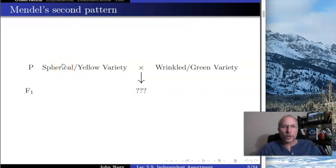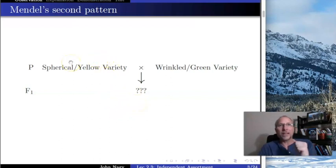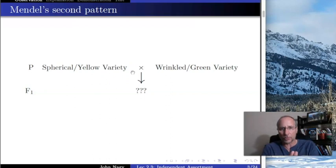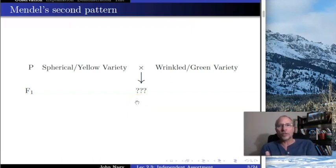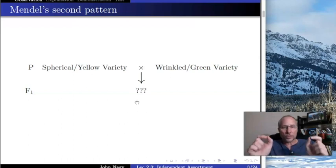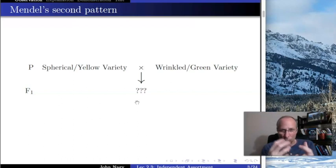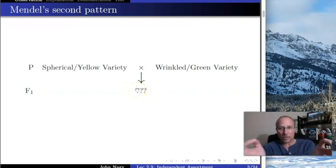So now let's get to the prediction: what would you expect to see in the F1? We saw before that when he crossed round versus wrinkled, the F1 was all round — which meant that if this were generative fluid, round would have been the only individual to give fluid to the offspring. And the same thing with yellow: if you cross yellow with green, the offspring are all yellow. We would then expect the offspring to be some sort of mixture of the two if it's generative fluid.